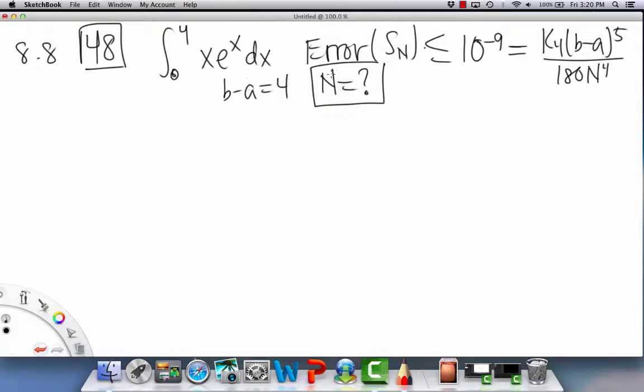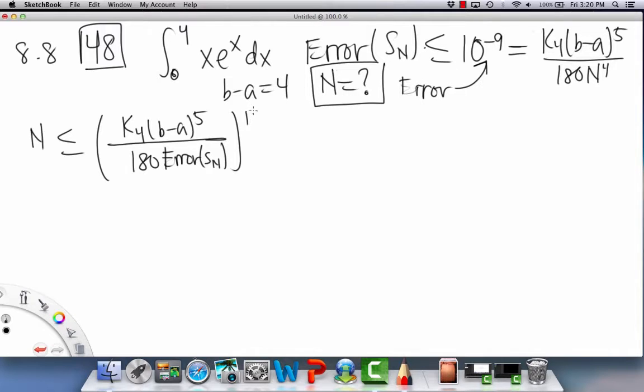Okay, so then we also know the error equals this, equals that value, and we need to find K4. So let me first of all just solve for n, and n will turn out to be, let's see, what are we going to have here? Hold on. So we're actually going to have the K4, and then (b-a)^5 over 180, and then the error goes down here. This is the same process that I did for the previous problem. And then one to the one-fourth power, because n was to the fourth, right, instead of the second.